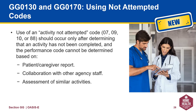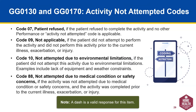Each of the activity attempted codes is defined here. CMS will expect the use of the DASH to be a rare occurrence. Code 07 if the patient refused, refusing to complete the activity and no other code is applicable. Code 09, not applicable, if the patient did not attempt to perform the activity and did not perform this activity prior to the current situation. Code 10, not attempted due to environmental limitations, if the patient did not attempt this activity due to, for example, the lack of equipment or weather constraints. Code 88, not attempted due to medical condition or safety, if the activity was not attempted due to medical condition or safety concerns and the activity was completed prior to the current illness, exacerbation, or injury.